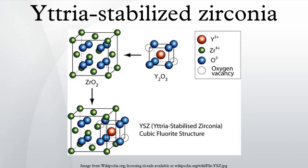The resulting doped zirconia materials are termed stabilized zirconias. Materials related to YSZ include calcia, magnesia, ceria, or alumina stabilized zirconias, or partially stabilized zirconias. Hafnia stabilized zirconia is also known.